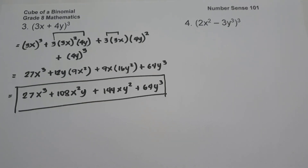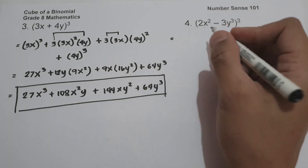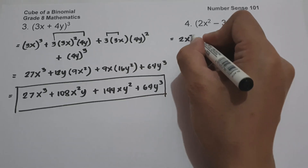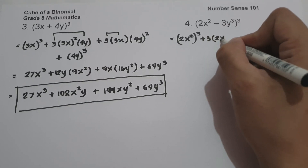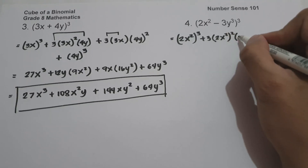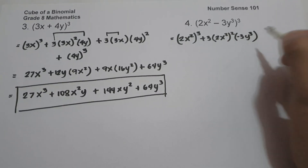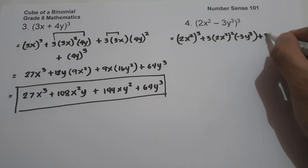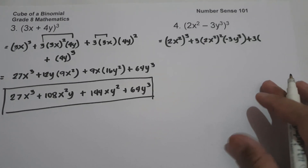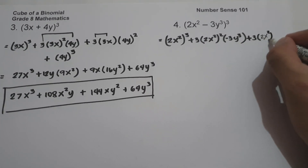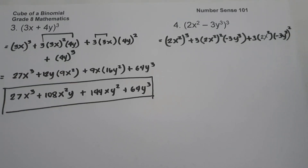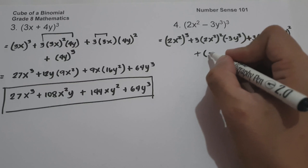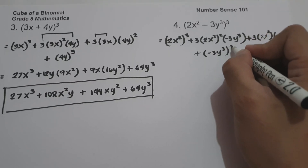Example 4: we have the quantity (2x² − 3y³) raised to 3. The cube of the first term is 2x² raised to 3, plus the constant 3 multiplied by the square of 2x² times the second term negative 3y³. The third term is 3 times the first term 2x² multiplied by the square of negative 3y³. The last term is the cube of negative 3y³, that is (−3y³) raised to 3.